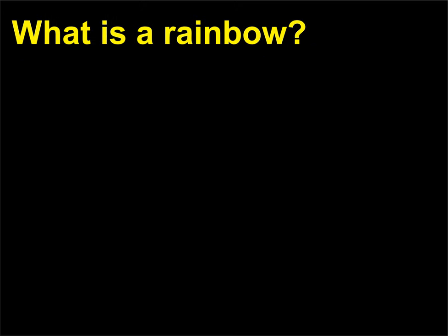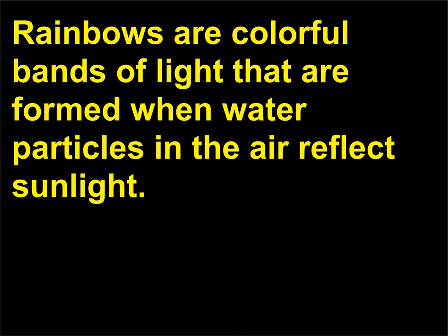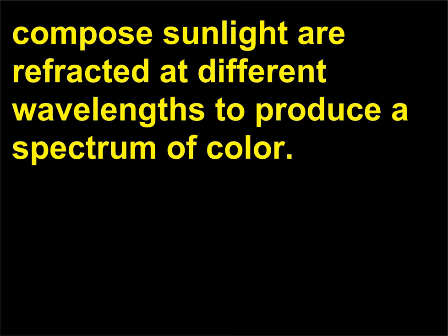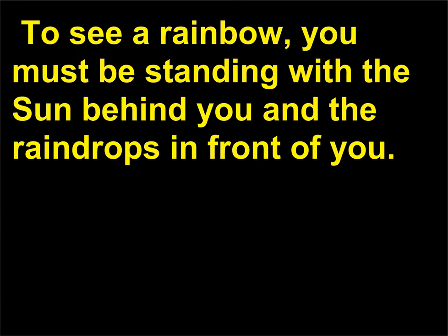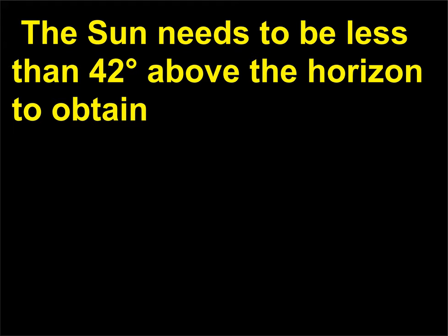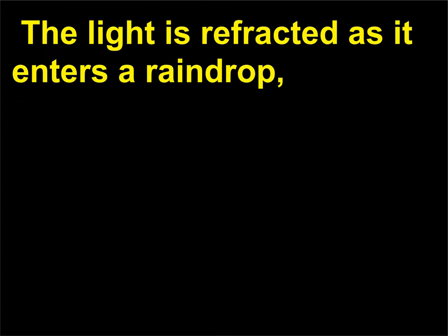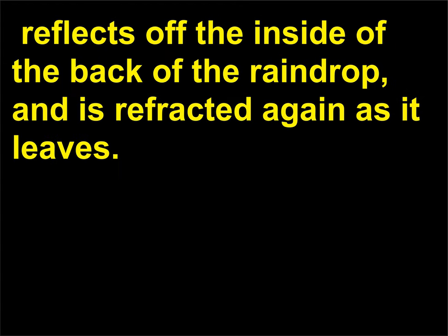What is a rainbow? Rainbows are colorful bands of light formed when water particles in the air reflect sunlight. As sunlight enters the drops and droplets, the different wavelengths of colors that compose sunlight are refracted at different angles to produce a spectrum of color. To see a rainbow, you must be standing with the sun behind you and the raindrops in front of you. The sun needs to be less than 42 degrees above the horizon so that the light waves are properly reflected. The light is refracted as it enters a raindrop, reflects off the inside of the back of the raindrop, and is refracted again as it leaves.